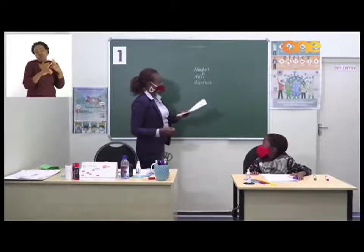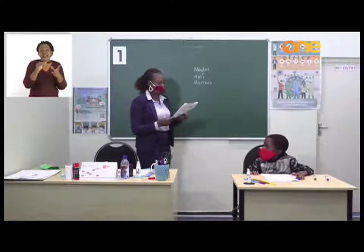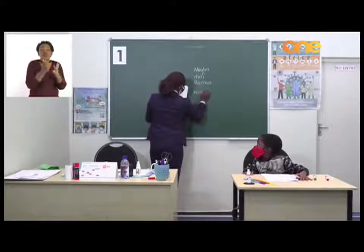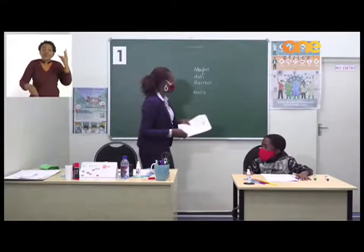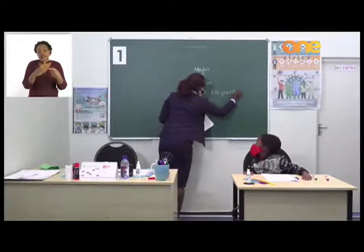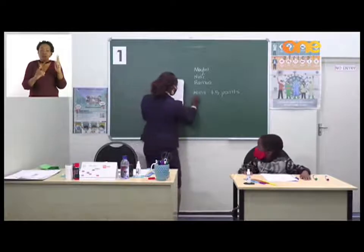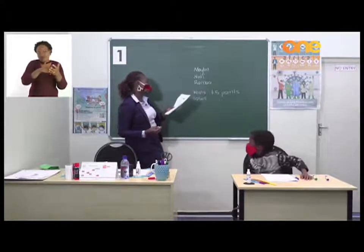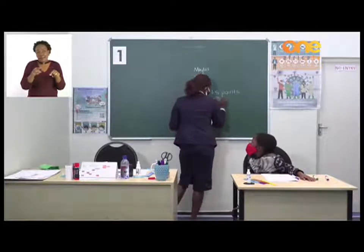Let's read the story. Marilyn, Nini, and Romeo are keeping score of the game they are playing. When a player wins a game, that player gets five points, which means plus five points. If a player loses a game, the player has three points taken away, which means minus three points.